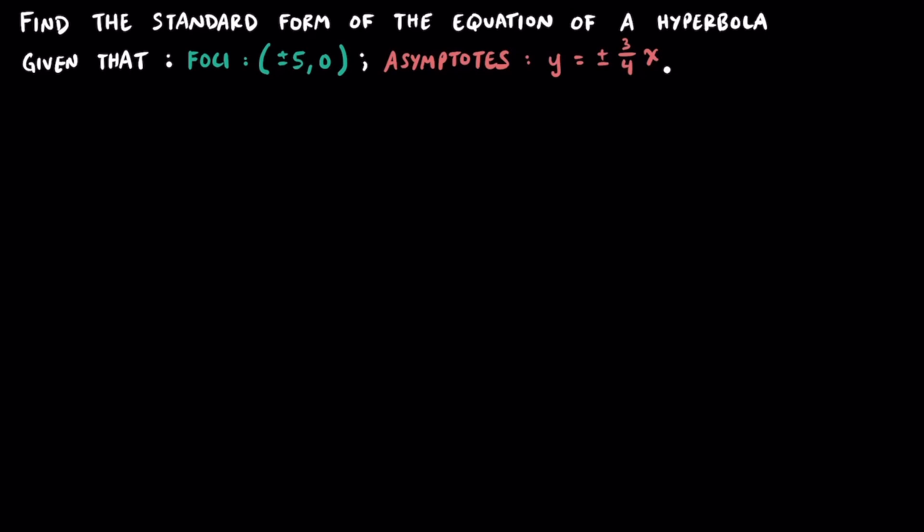In this example, let's find the standard form of the equation of a hyperbola given that the foci is plus or minus 5, comma 0, and there are two asymptotes y is equal to plus or minus 3 fourths x.